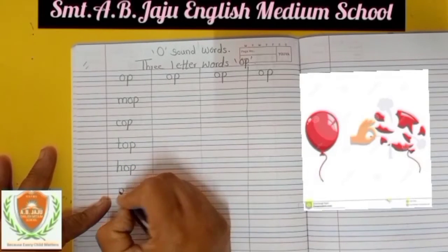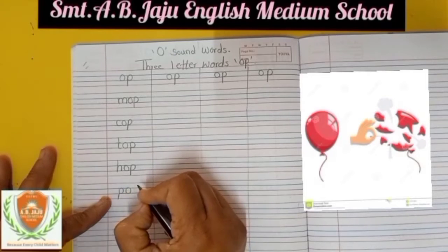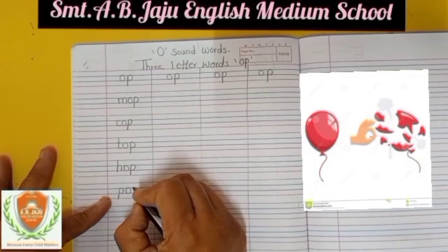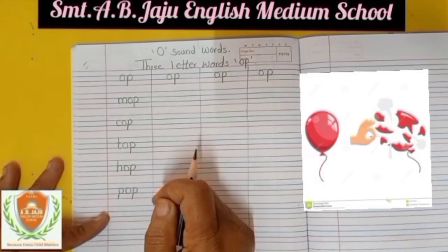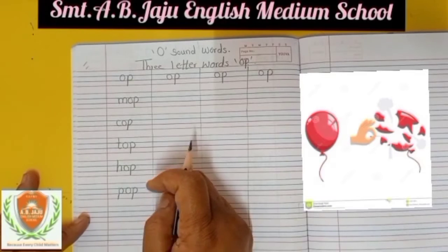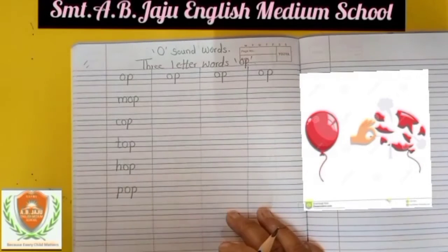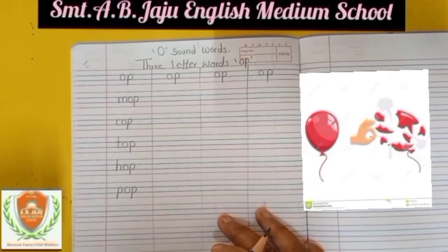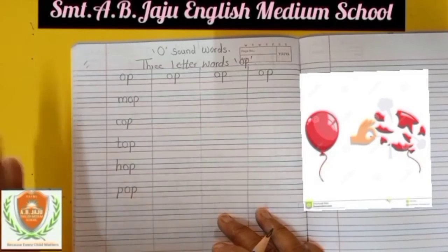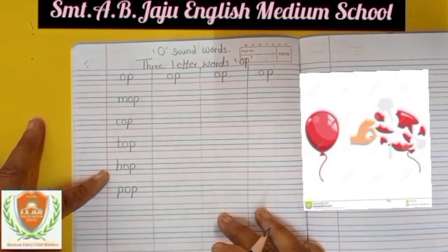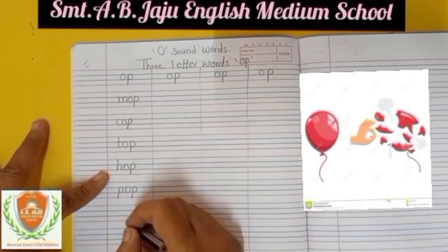Write small P, sound of P is P. Small O, sound of O is O. Small P, sound of P is P — P-O-P, pop. Pop means achanak phutna — suddenly bursting. For example, if we have a balloon and we poke it with a pin, it bursts — that is called pop.